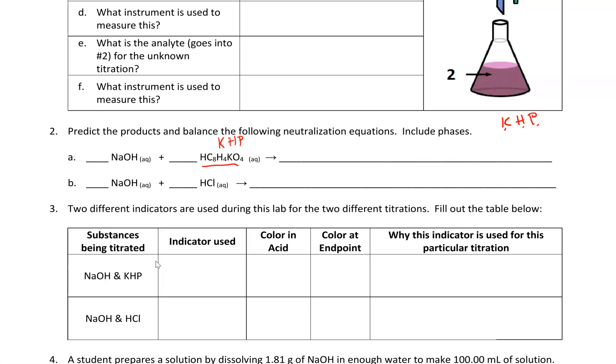KHP is a weak acid, and we can use it to standardize sodium hydroxide. We have to standardize sodium hydroxide because, just like in the last lab where we could not trust the mass of sodium thiosulfate pentahydrate, we can't trust the mass of sodium hydroxide.